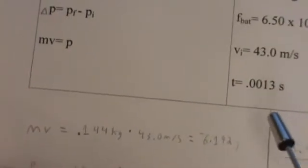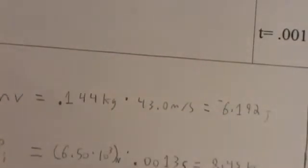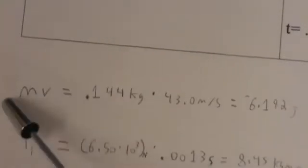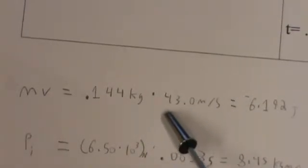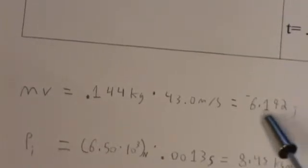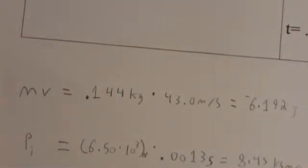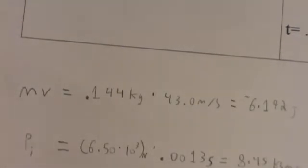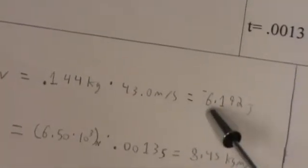Let's begin by determining the momentum. We start off with mass times velocity. The mass was 0.144 kilograms, multiplied by the initial velocity of 43 meters per second. Multiply them together and you get 6.192 kilogram meters per second. There's a negative sign because the ball is coming towards the batter, so this is negative. When the batter hits the ball, it's going to be going in the positive direction. So we now have negative 6.192 kilogram meters per second.